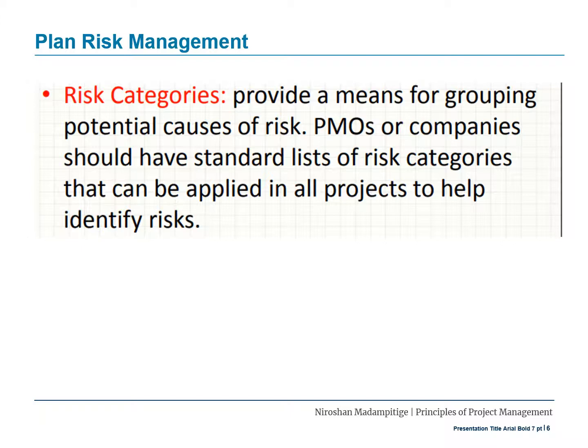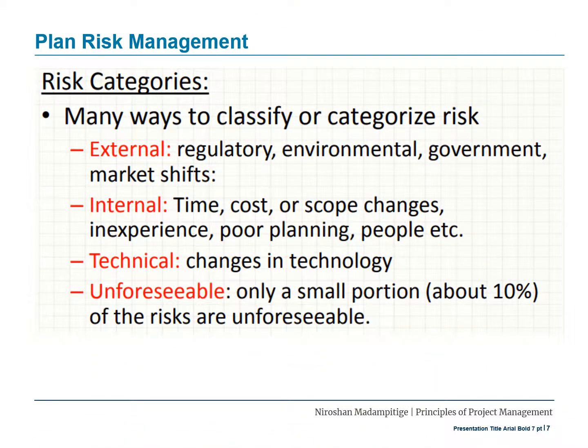The risk management plan also includes risk categories, which provide a means for grouping potential causes of risk. PMOs or companies should have a standard list of risk categories that can be applied across all projects to help identify risks. It's important to understand these categories because if you don't, your risk identification during planning might not be appropriate. There are many types — let's have a look at them.